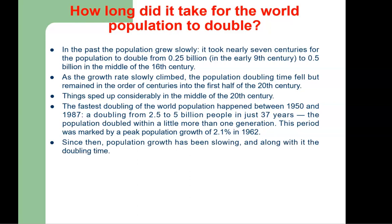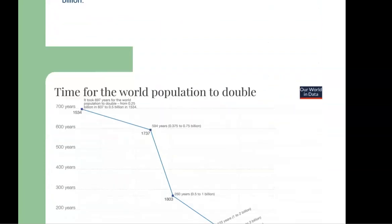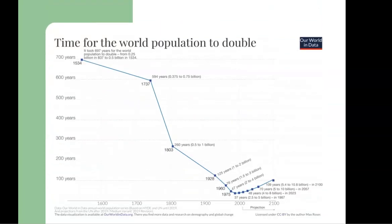Since then, population growth has been slowing, and along with it the doubling time. According to UN projections, by 2100 it will once again have taken approximately 100 years for the population to double to a predicted 10.8 billion people. Here in this figure we can see the time for the world population to double.